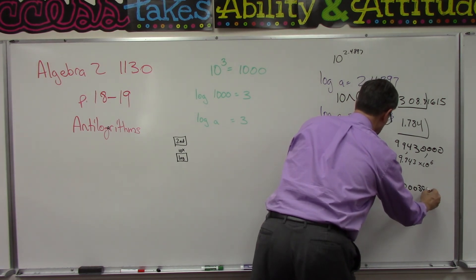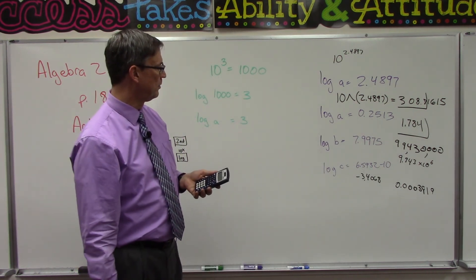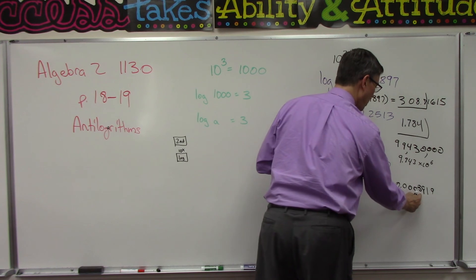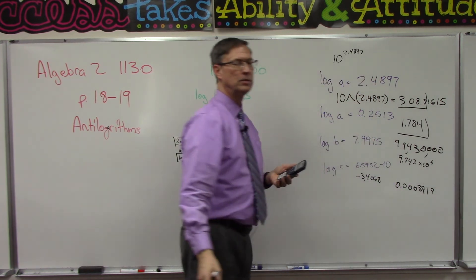I'm going to have four significant digits. I forget on that type of problem if they rounded it off to 0.0004 or if they did 3.9 or 3.92. Anyways, you get the idea.